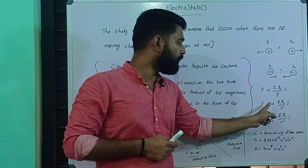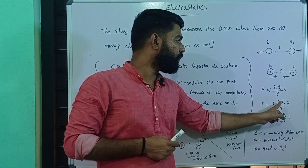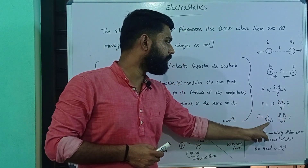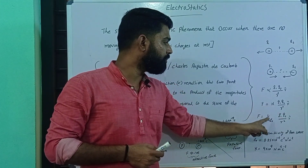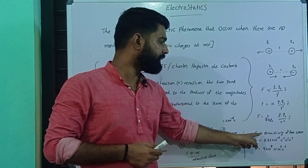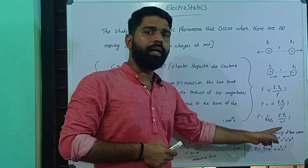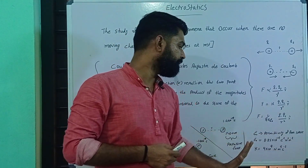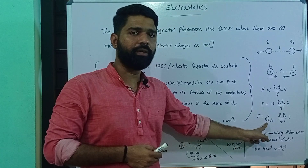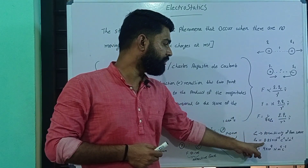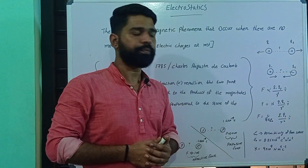F is directly proportional to q1·q2 divided by r², and we introduce a proportionality constant k, so F = k·q1·q2 / r² r-cap. The value of k is equal to 1/(4πε₀) into q1·q2 divided by r² r-cap. The value of ε₀, the permittivity of free space, is 8.85 × 10⁻¹² C²N⁻¹m⁻². Substituting, k = 9 × 10⁹ N·m²/C².